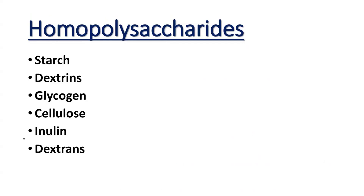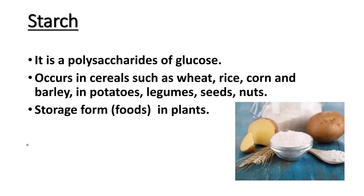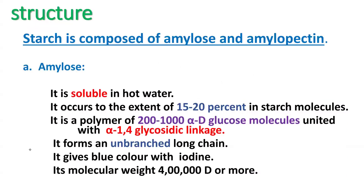Now we look at the different types of homopolysaccharides. Examples include starch, dextrin, glycogen, cellulose, inulin, and dextrans. Starting with starch: starch is a polysaccharide of glucose — glucose is the building block. It occurs in cereals such as wheat, rice, corn, and barley, as well as potatoes, legumes, seeds, and nuts. It is generally a storage form in plants — plants store excess glucose in the form of starch.